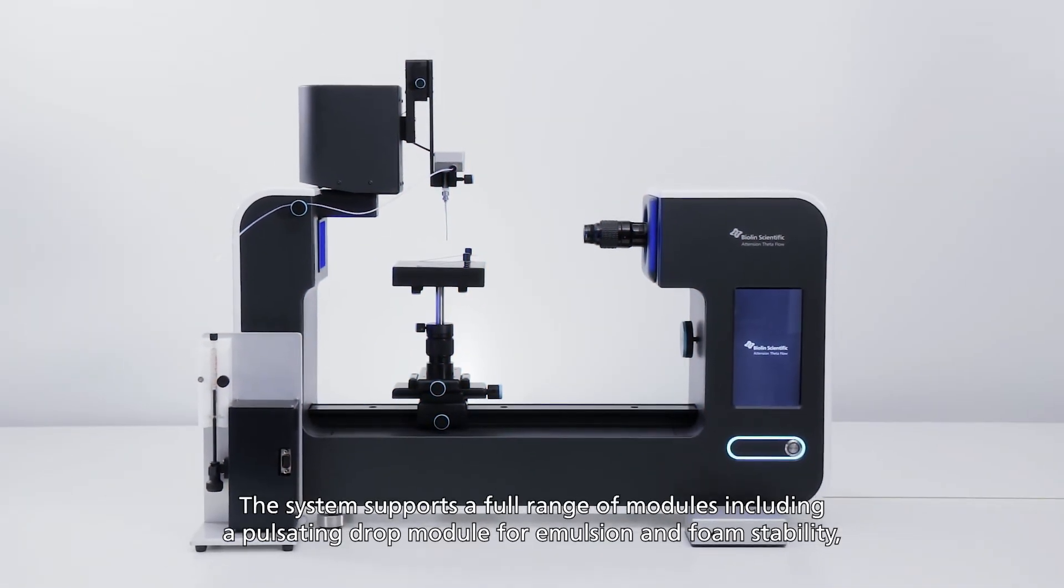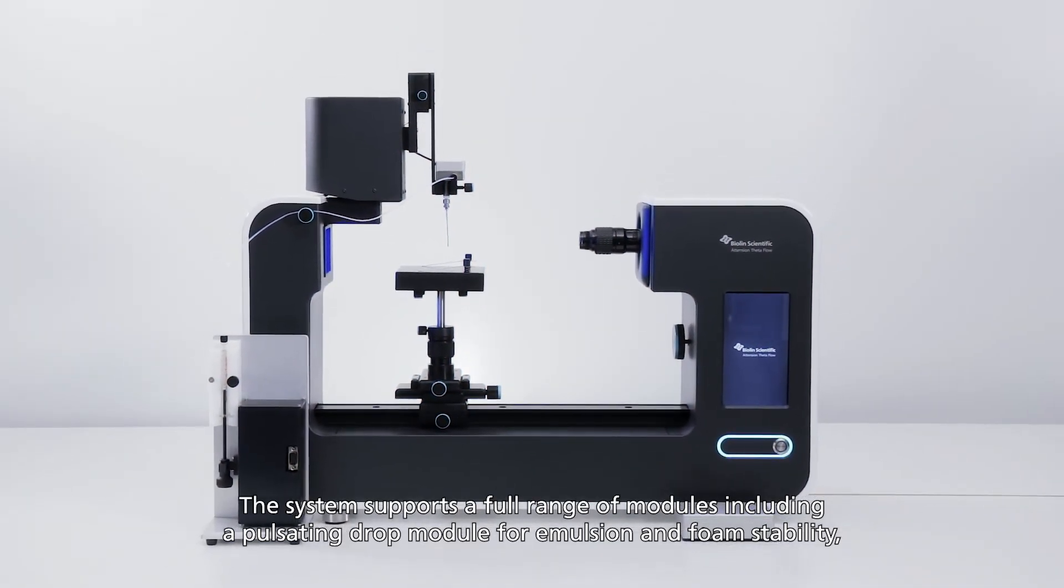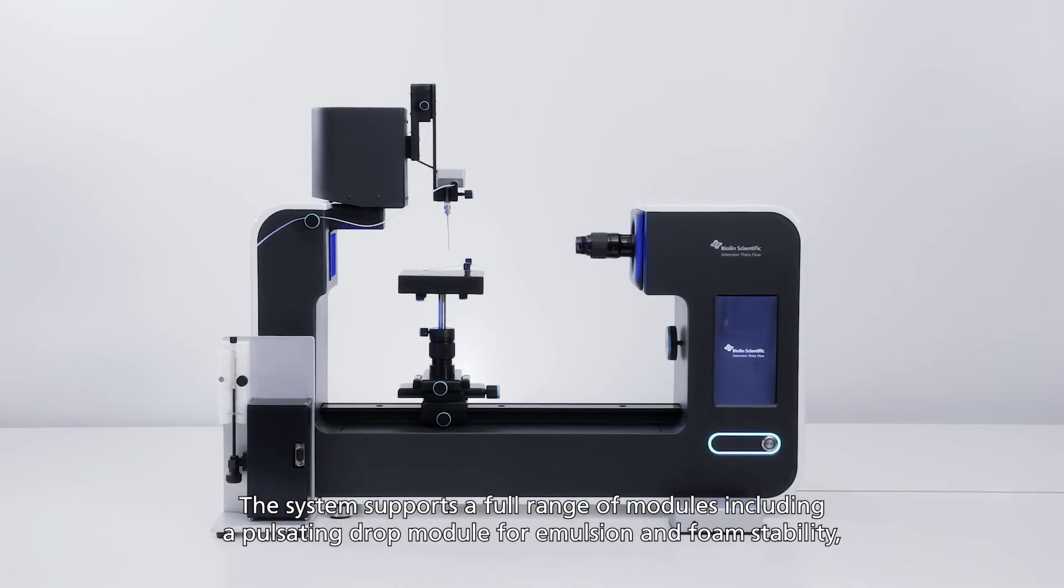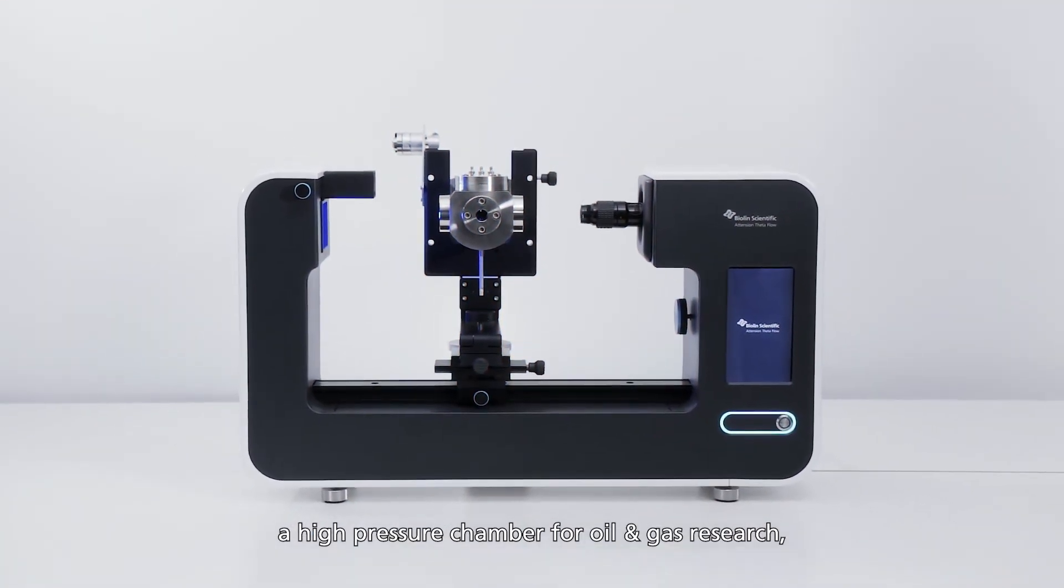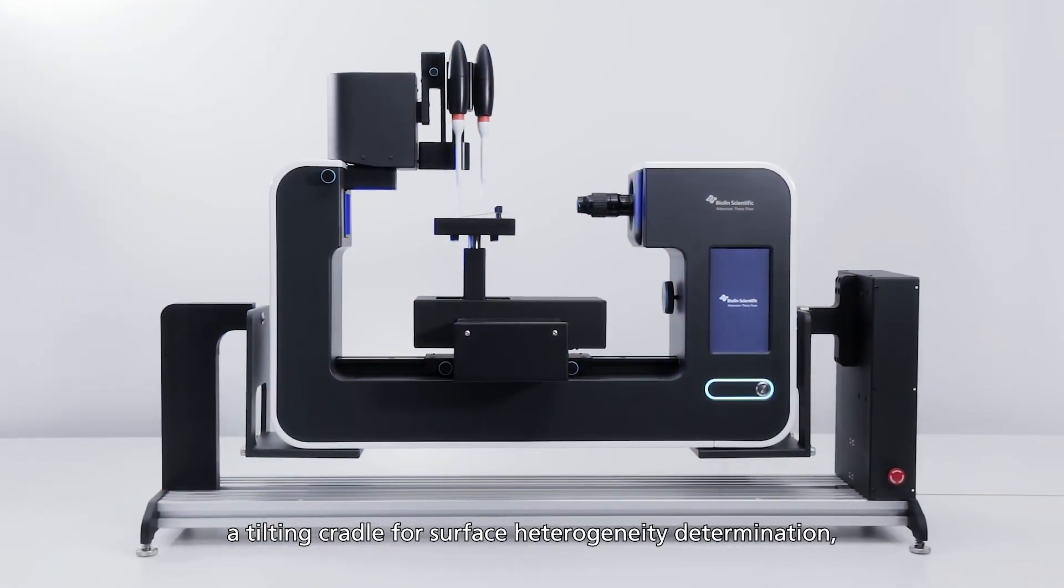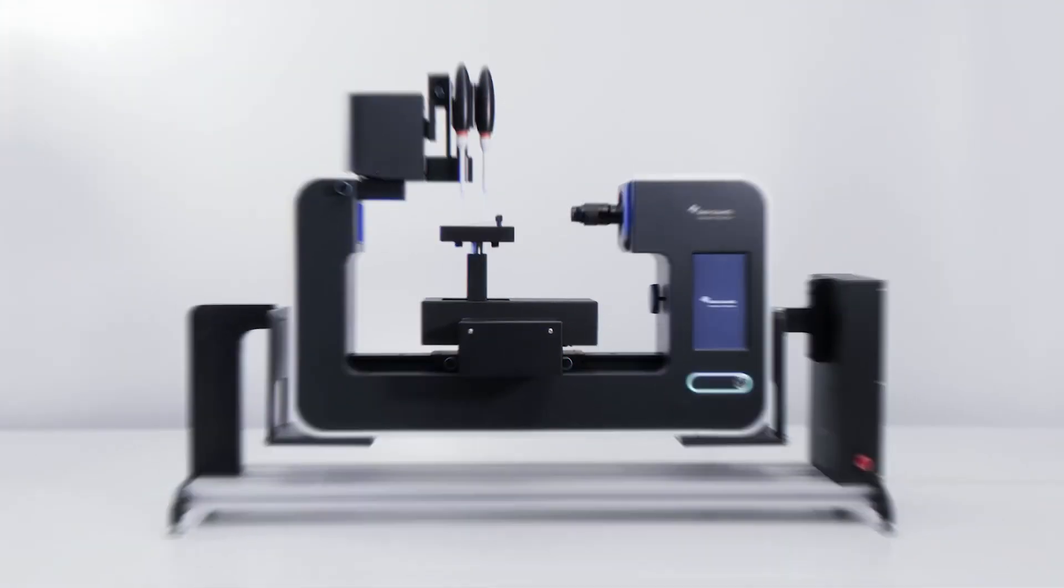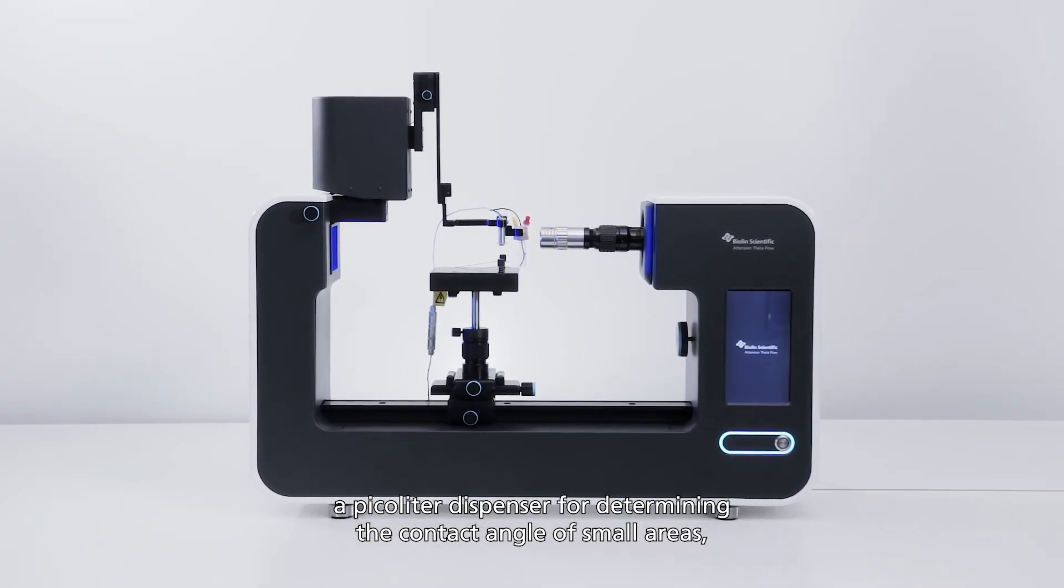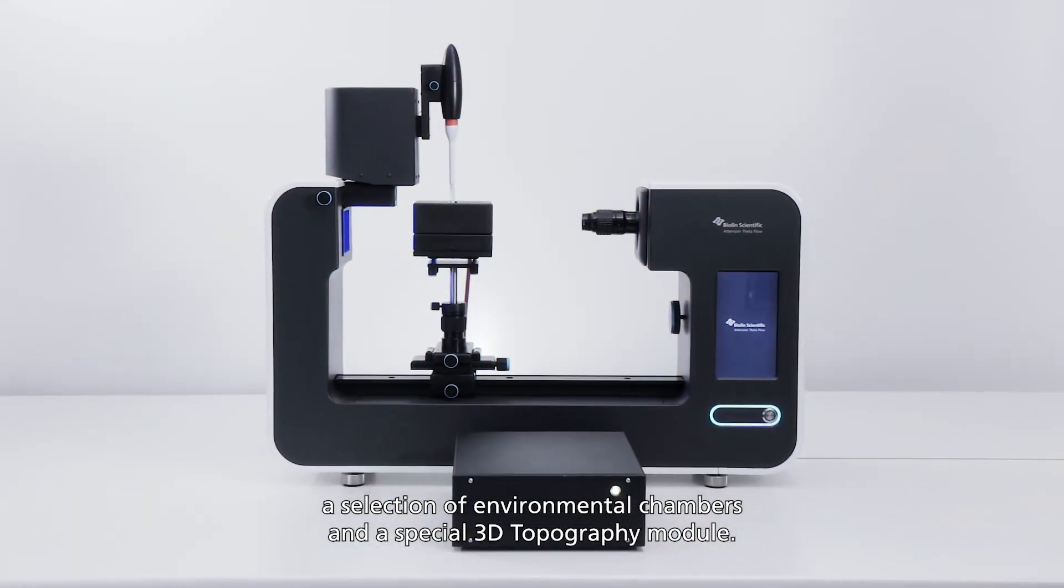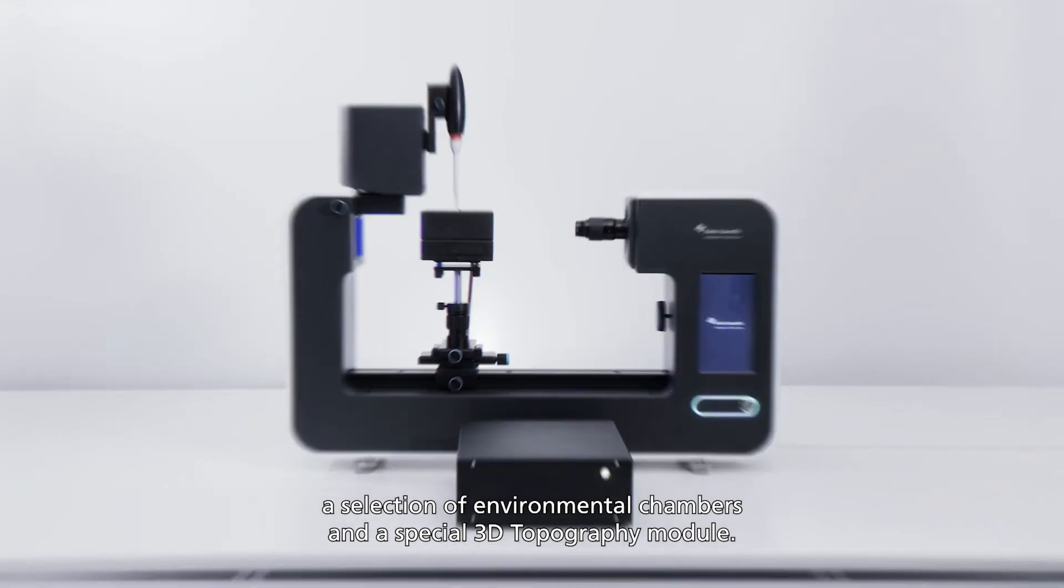The system supports a full range of modules, including a pulsating drop module for emulsion and foam stability, a high pressure chamber for oil and gas research, a tilting cradle for surface heterogeneity determination, a picoliter dispenser for determining the contact angle of small areas, a selection of environmental chambers, and a special 3D topography module.